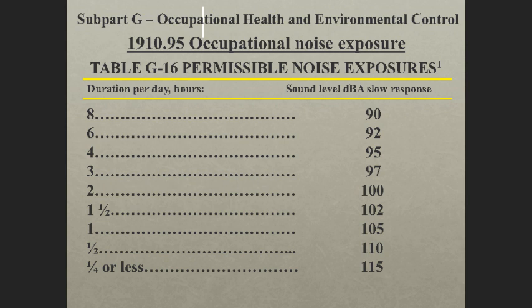Listed on the screen now is a chart of occupational noise exposure and the amount of time that an employee can be exposed to certain decibels on the A-weighted scale. For a regular eight-hour day, we can expect an employee to be exposed on average to approximately 90 decibels on the A-weighted scale. If we are exposed to greater sound pressures — for example, 105 dBA — we are looking at a total duration of one hour.